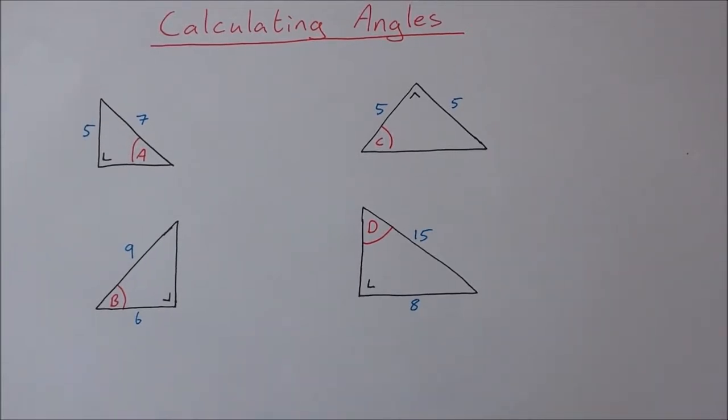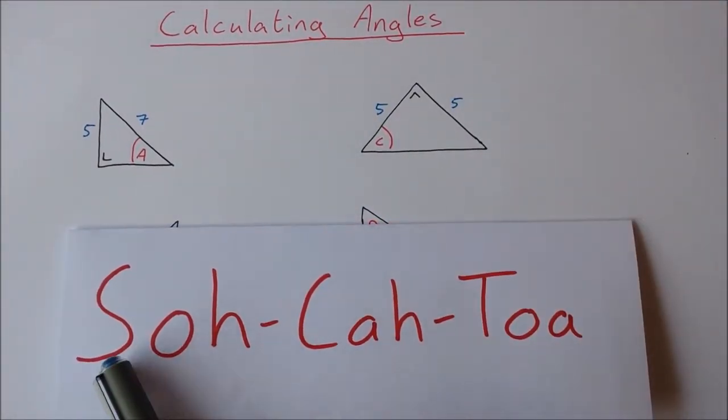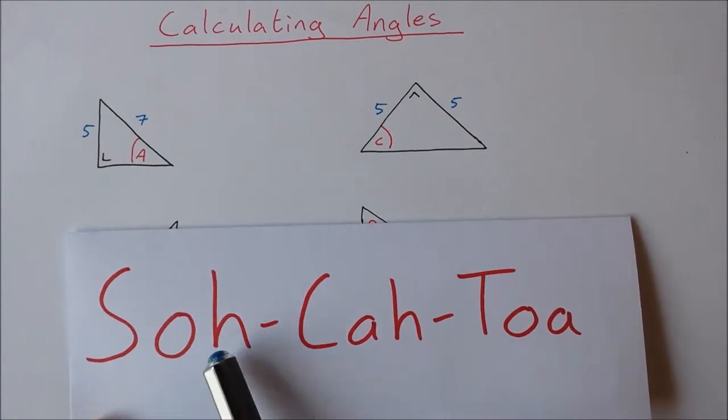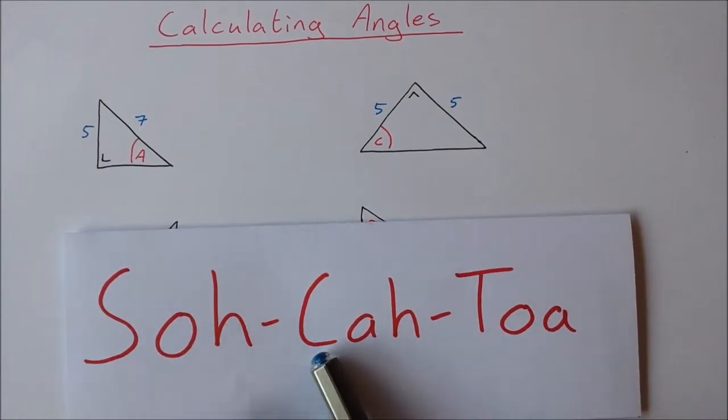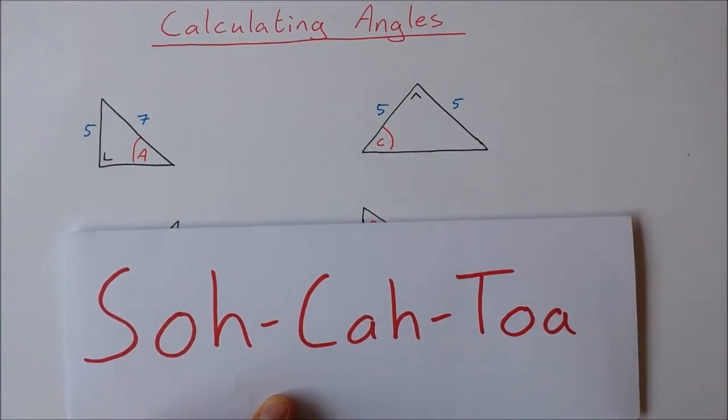Now for this the most important thing to remember is SOHCAHTOA. So this means sine is opposite over hypotenuse, cos is adjacent over hypotenuse and tan is opposite over adjacent.